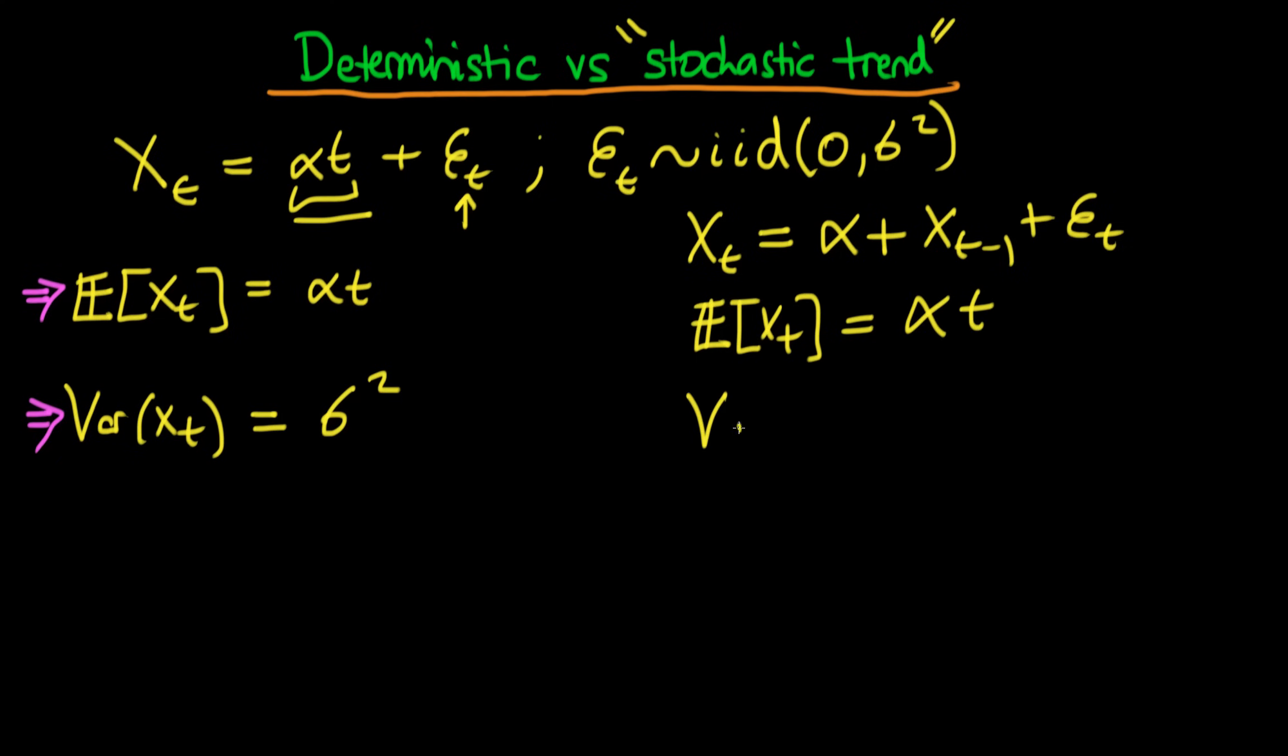But the difference comes in the fact that the variance of Xt here is not just a constant Sigma squared, it's Sigma squared times time. So the variance of this process is increasing throughout time.